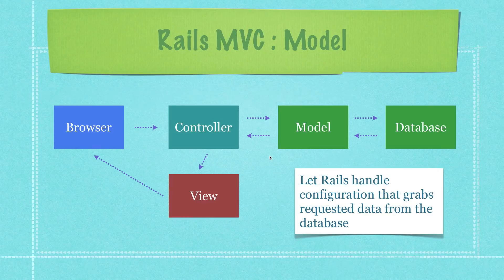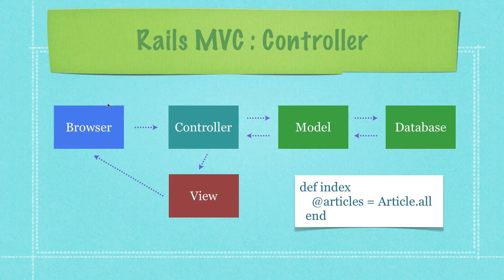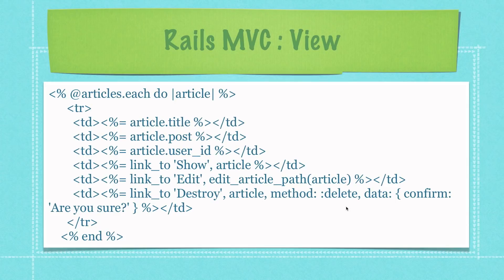The model part is thankfully handled by Rails for the most part — we just tell Rails to handle the configuration for grabbing data from the database and providing it to the controller so we can display it in the browser. In the view, we use the instance variable 'articles' from the index action, cycling through all the different articles to output a title, post, user ID, and links for show, edit, and destroy. This is the entire process of creating a Rails web application right here.